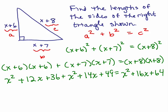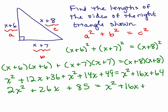Now, let's simplify the left-hand side. We have x squared plus x squared. Those are the two like terms so we have 2x squared. We have a 12x and a 14x which is going to be 26x, and we have 36 and 49 which is going to be 85. And on the right side I have x squared plus 16x plus 64.